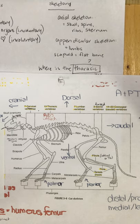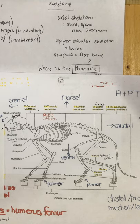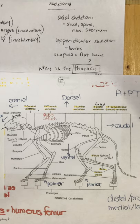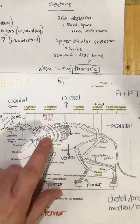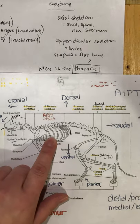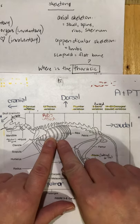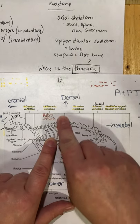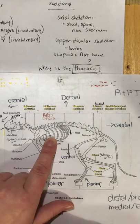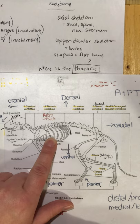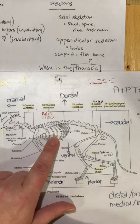If I asked: where is the thoracic vertebrae in relation to the sternum? The sternum is the anchor. The thoracic is more towards the back, which means it's dorsal. So the thoracic vertebrae are dorsal to the sternum.